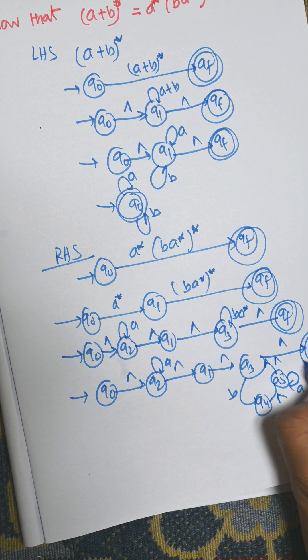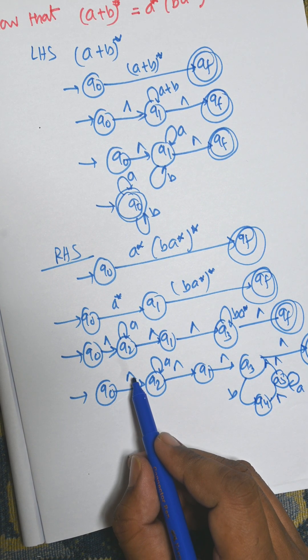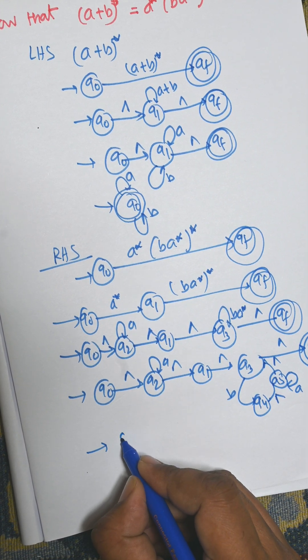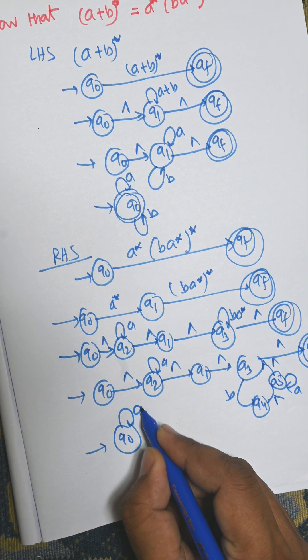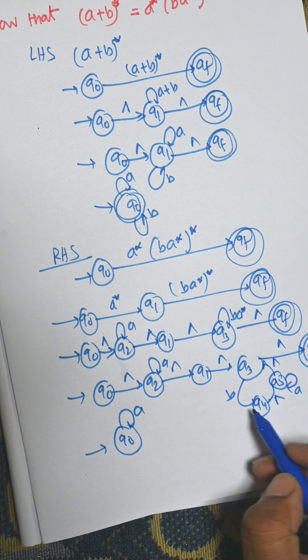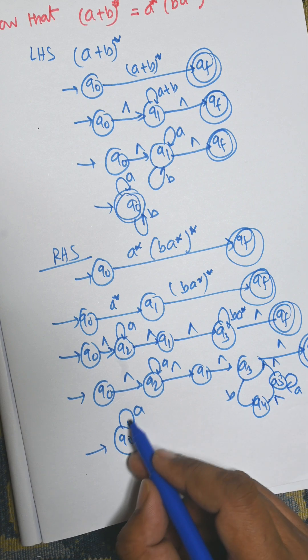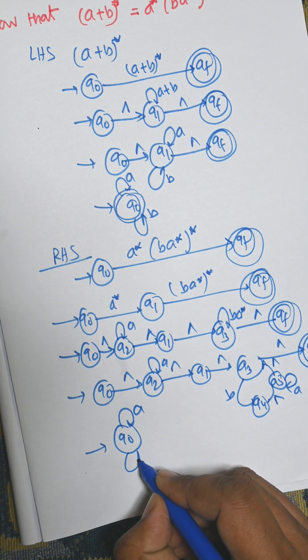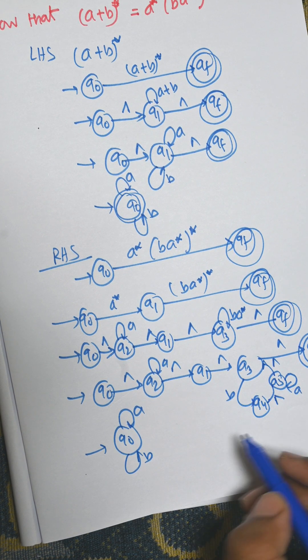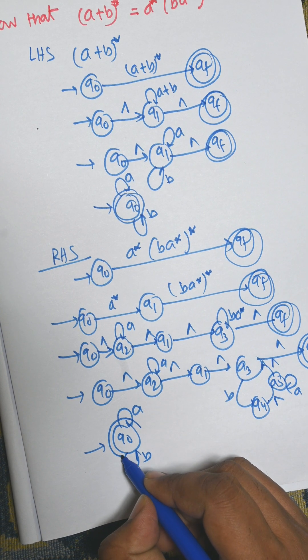Now finally we need to remove this empty symbol. When we delete this empty symbol we will get q0 a and when you delete this one, this one, this one, there is an a which is already a and there is another input b. So every input state goes to the one state that is q0.